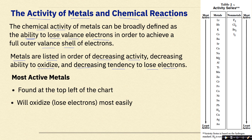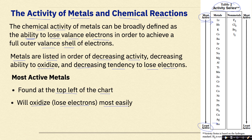Over here we have Table J of the activity series. This is in the New York State Regents Reference Table, so if you're not from New York State, you're not going to recognize this. But it's a nice graphic to show a basic understanding of the activity of metals, where your most active metals are at the top and your least active metals are at the bottom. The most active metals are found at the top left of the chart, and these are going to oxidize or lose electrons most easily. We're going to be using this chart a lot during this video.